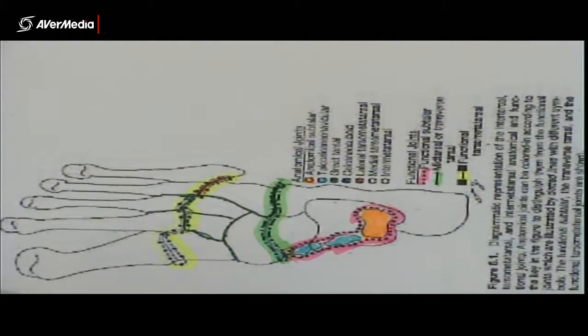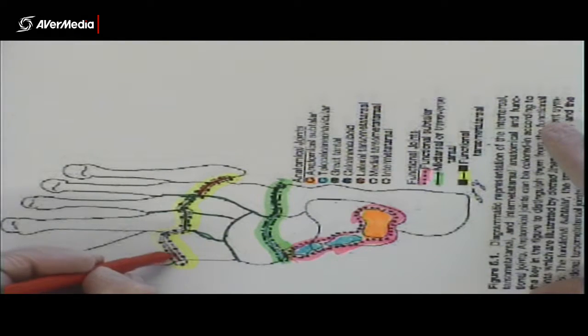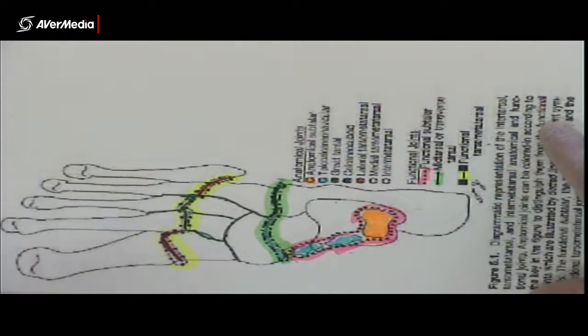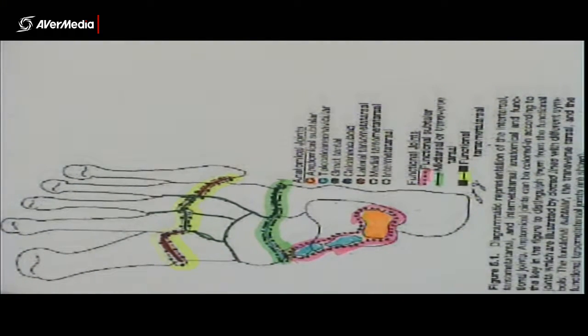And then, of course, we have a medial tarsometatarsal joint. And you've probably guessed, of course, that that one's going to be over here. Between the medial cuneiform and the first metatarsal. So that's one separate anatomical joint there as well.